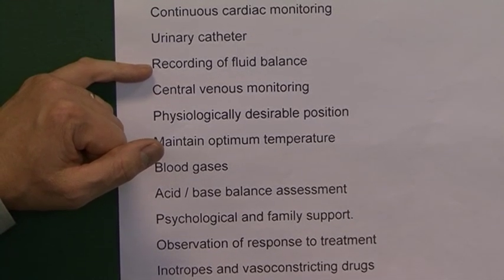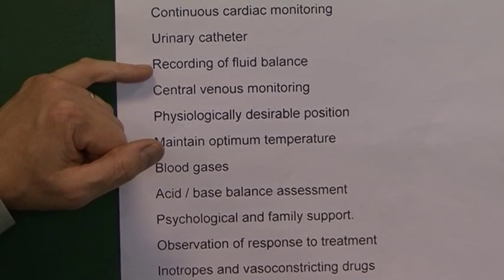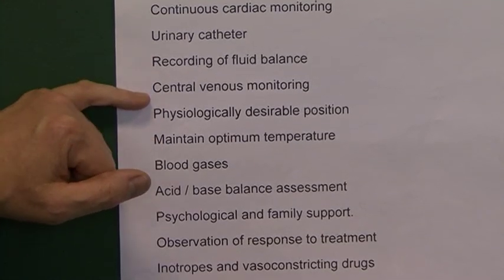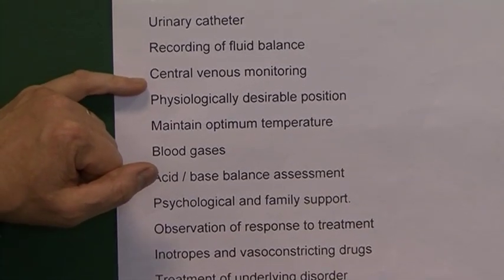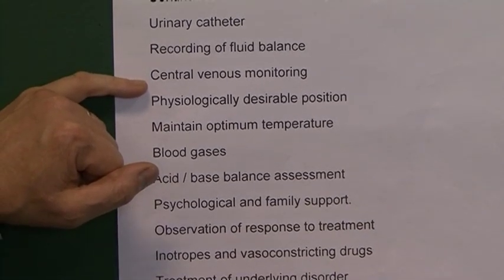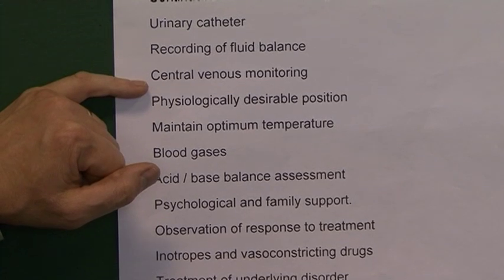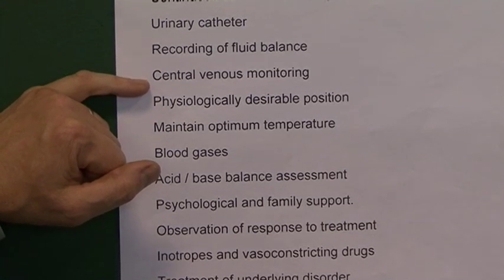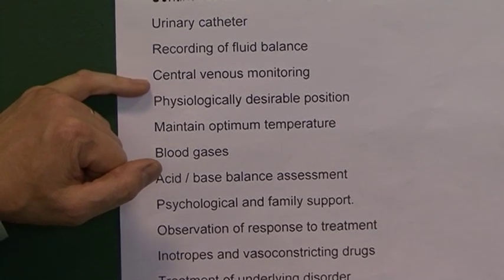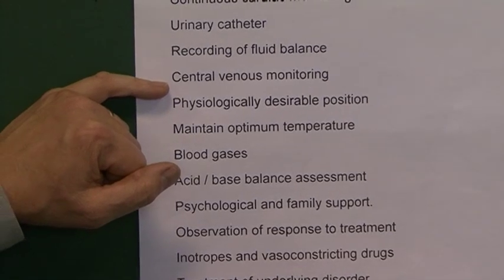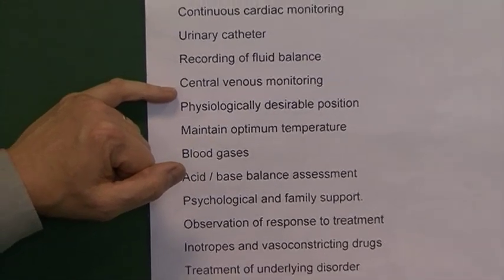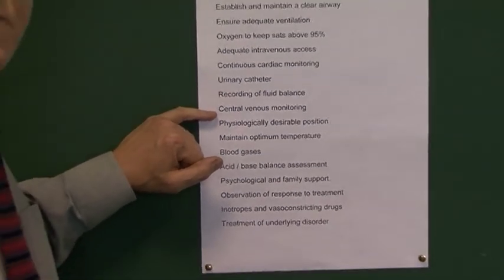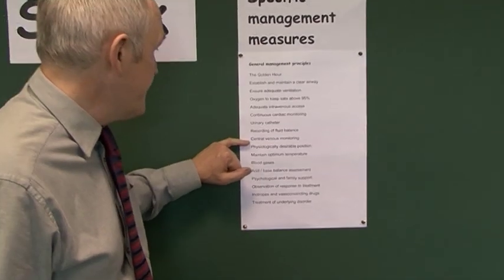We need to know what is going into the patient and what is coming out. Central venous monitoring and a central venous line, if available, is useful — it tells us about the preload, about the amount of blood going back to the heart, and it helps us to titrate the amount of intravenous fluids we give.